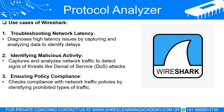Network administrators can periodically capture network traffic and then use Wireshark's filtering and analysis capabilities to look for prohibited types of traffic. For instance, if peer-to-peer traffic is prohibited, the network administrator could filter for traffic on the ports commonly used by peer-to-peer software. If such traffic is found, they can examine the source and destination IP addresses to identify the device violating the policy.